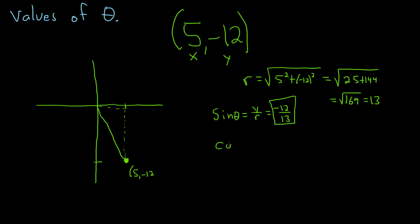And the cosine of theta, that is x over r. So here x is 5, so that will be 5 over 13.